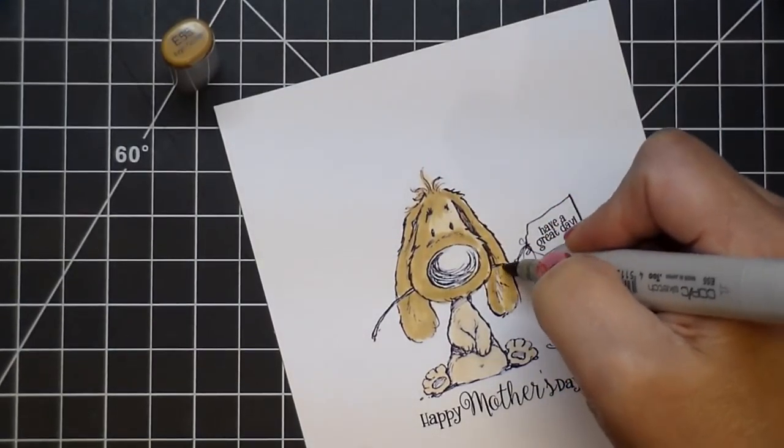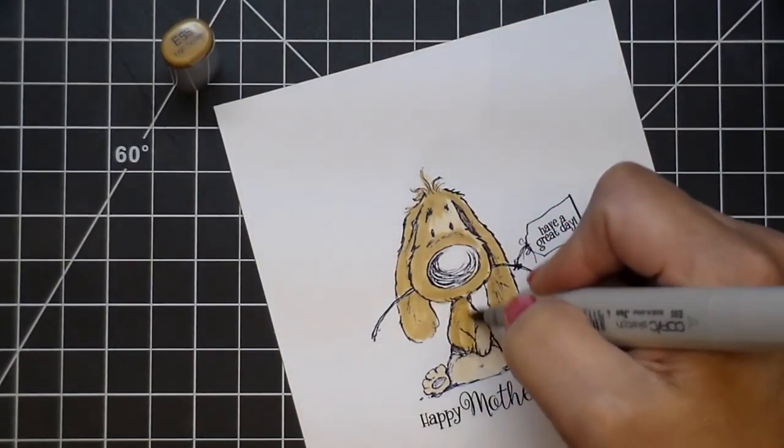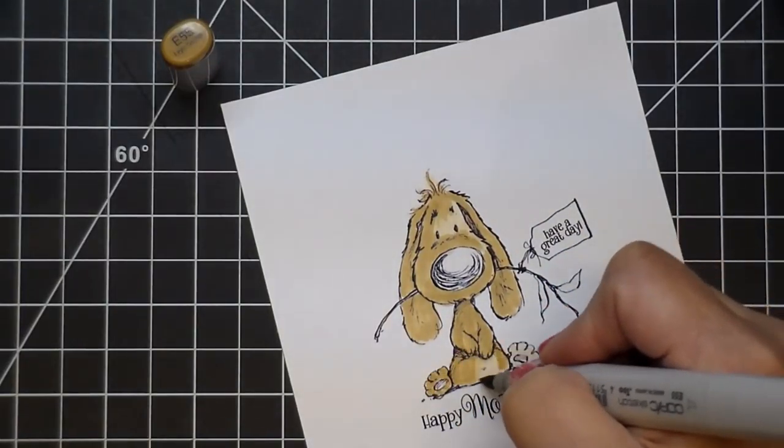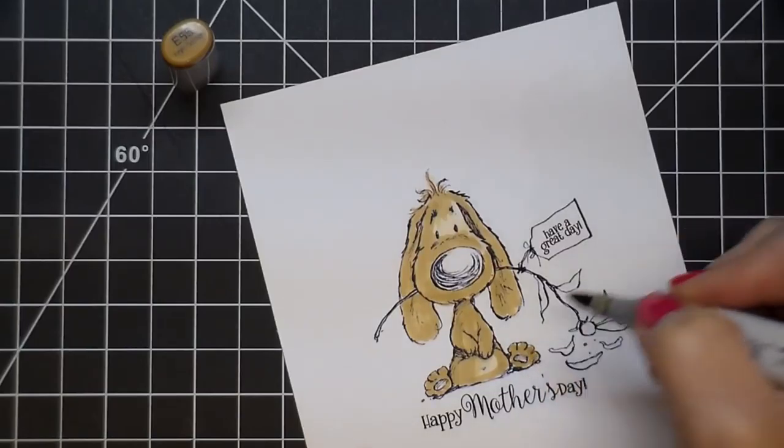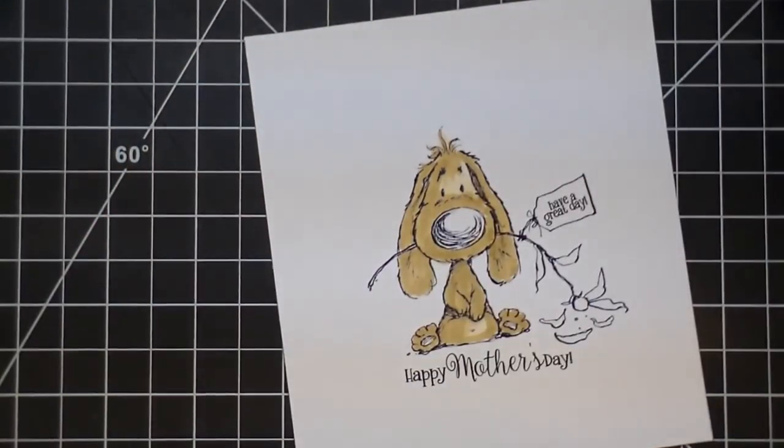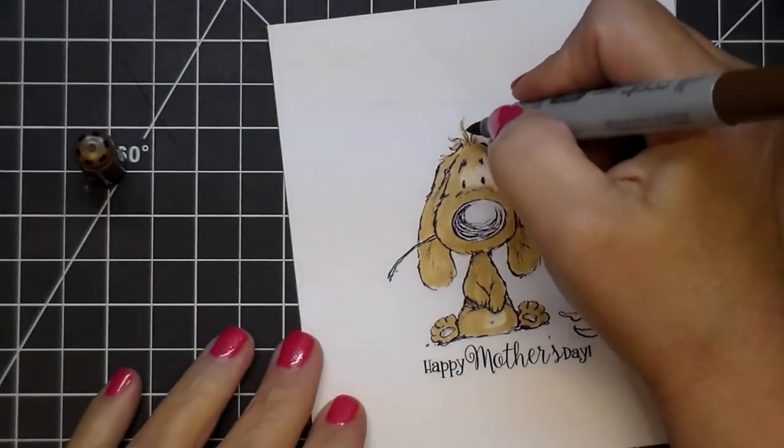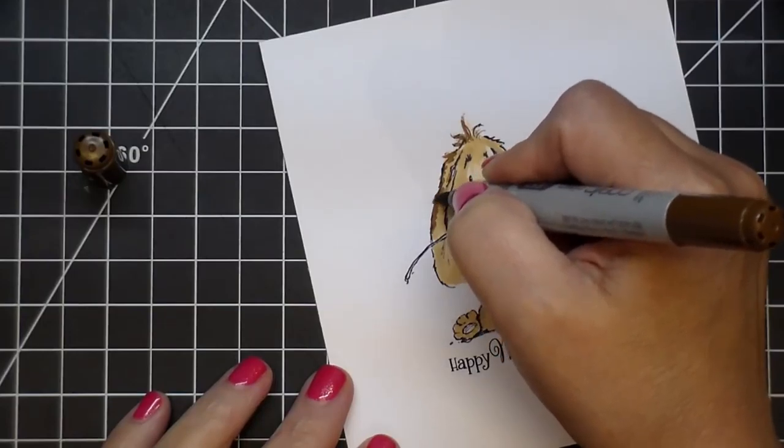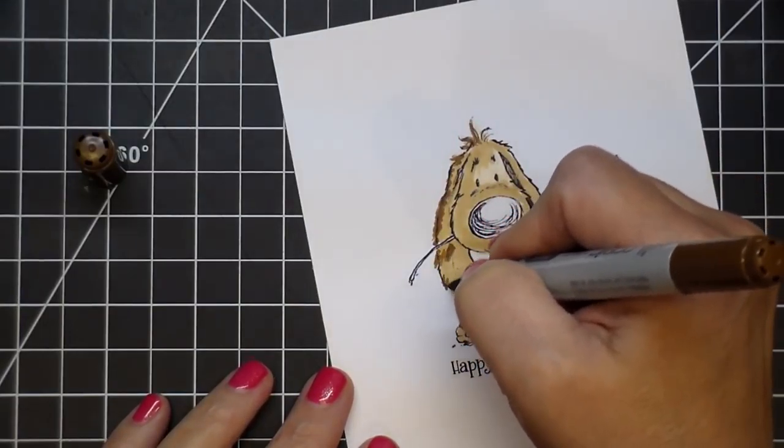So I started with E51, and now I'm using E55, I believe, and I'm going over the entire dog giving it a base coat. This dog is so cute. As you can see, the outline of it is not very dark, so I do go over it quite a few times until I was happy with it.